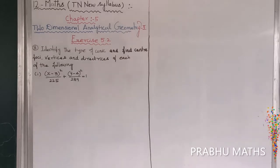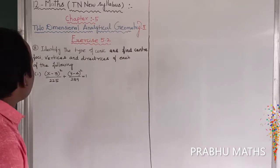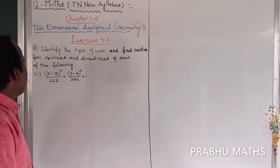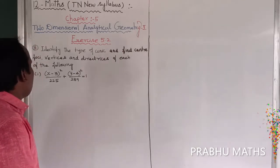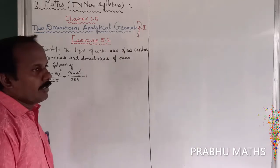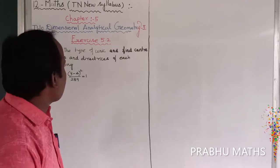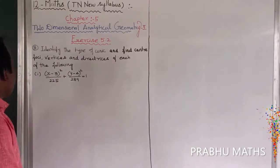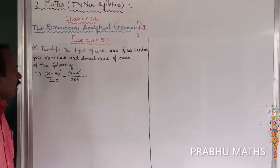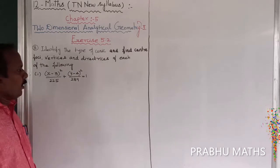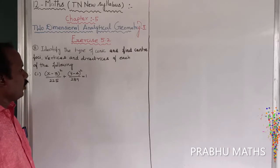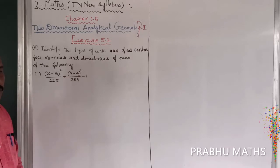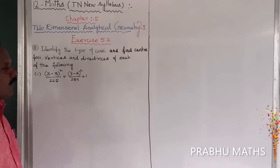Identify the type of the conic and find the center, four key vertices, and the directrices of each of the following. The first subdivision is (x-3)²/225 + (y-4)²/289 = 1. That is the given sum.